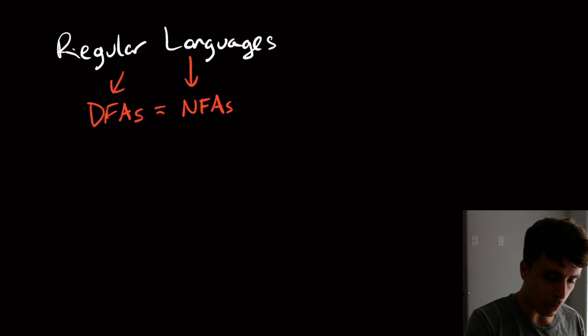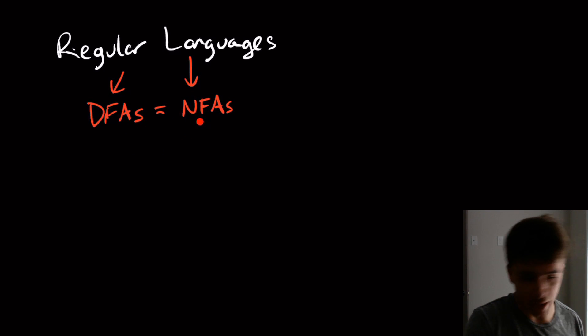And what we were able to show is that they are equivalent to each other, that I can convert a DFA into an NFA because it already is one and an NFA into an equivalent DFA, even if the DFA might be bigger and using the power set construction.